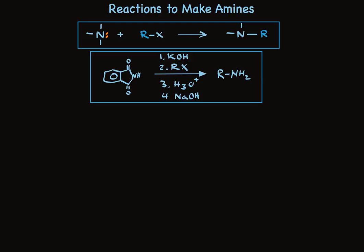An alternative alkylation scheme starts with a very odd-looking compound, and alkylates the nitrogen, and then hydrolyzes that compound to make a primary amine.